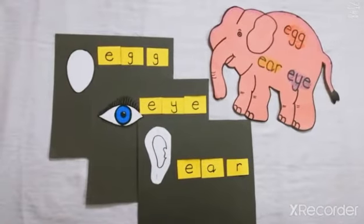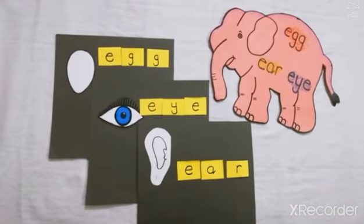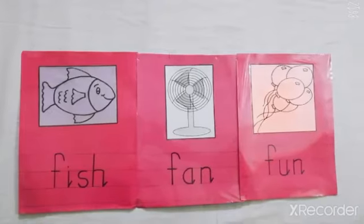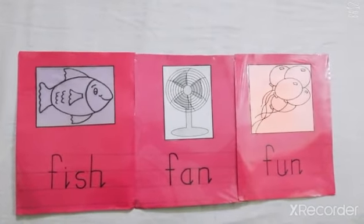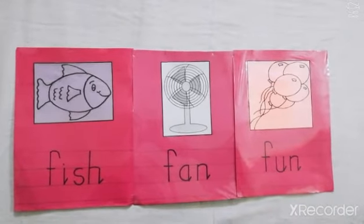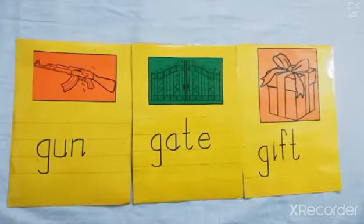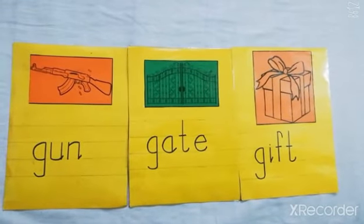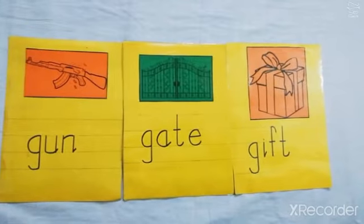Revise word making. Words with E: E-G-G, egg. E-Y-E, eye. E-A-R, ear. Words with F: F-I-S-H, fish. F-A-N, fan. F-U-N, fun. Words with G: G-U-N, gun. G-A-T-E, gate. G-I-F-T, gift.